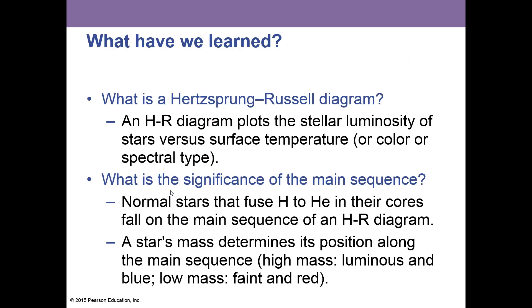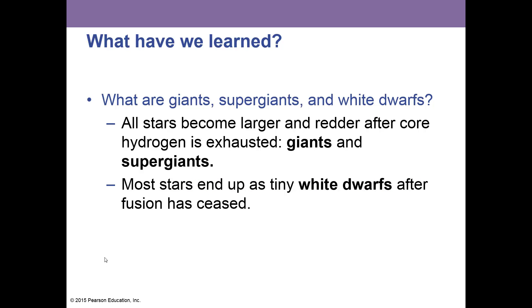An HR diagram plots the stellar luminosity of stars versus the surface temperature or color or spectral type. The significance of the main sequence is that normal stars that fuse hydrogen to helium in their cores fall on the main sequence. A star's mass determines its position along the main sequence—the high mass of the luminous and blue stars, low mass of the faint and red stars. All stars become larger and redder after core hydrogen is exhausted—these are the giants and supergiants. Once the fusion has ceased and they are dead, these stars end up as tiny white dwarfs.